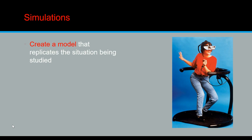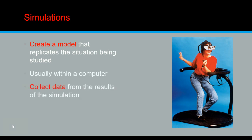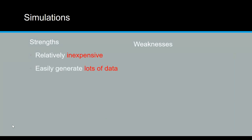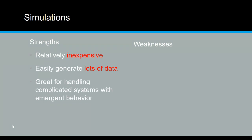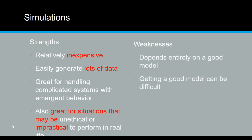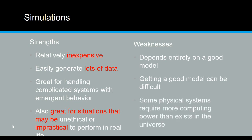Lastly, simulations: that's when we're trying to model a situation, mostly in a computer program, and from that we get results from the simulation. We'll run it hundreds or thousands of times to compare results and see how accurate we can get it. They can be pretty inexpensive and give you a lot of information, especially helpful when handling complicated systems, or situations that are unethical or impractical to perform in real life. The model does need to be good, and depending on the system, it could require more computing power than currently exists.